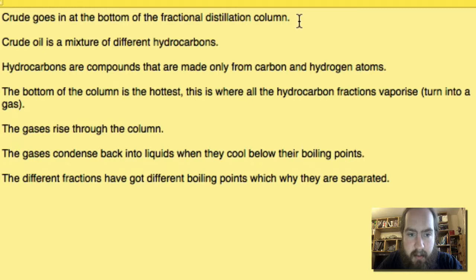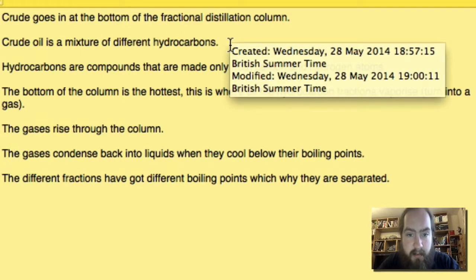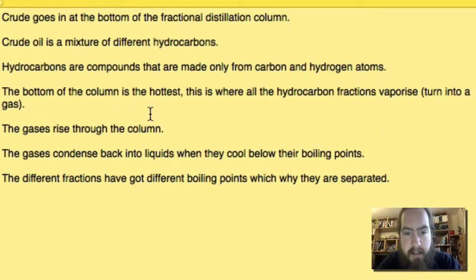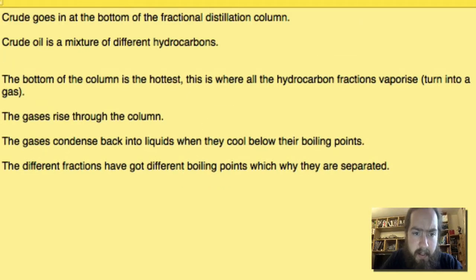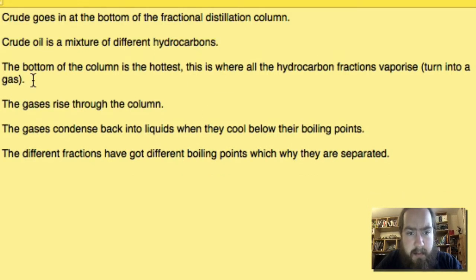Crude oil goes in the bottom of the fractional distillation column. Crude oil is a mixture of different hydrocarbons. Hydrocarbons are compounds that are made from only carbon and hydrogen atoms. The bottom of the column is the hottest. This is where all the hydrocarbons vaporize, which means turn into a gas. They are not burnt - that's a mistake you don't want to make, you'll lose a mark for that. The gases rise through the column. The gases condense back into liquids when they cool below their boiling points. The different fractions have got different boiling points, which is why they are separated.